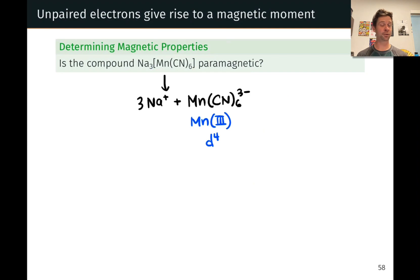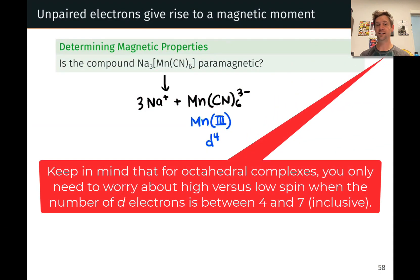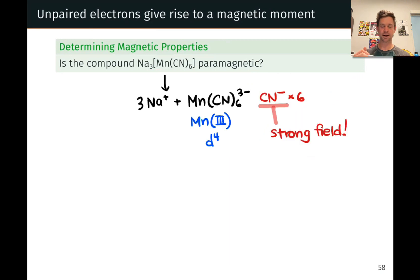If we unpack this a little bit, we've got manganese 3+, manganese in the +3 oxidation state, that corresponds to 4 d electrons, we're going to use that shortly. And we've got 6 cyanide ligands, and keep in mind here that cyanide is reliably a strong field ligand. So the crystal field splitting is going to be quite large, and we are going to pair electrons before putting them in the higher energy orbitals of the octahedral splitting.